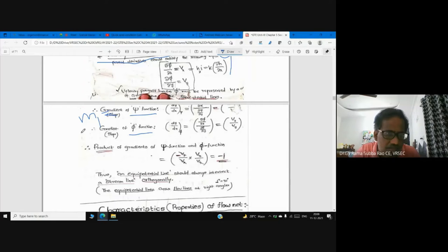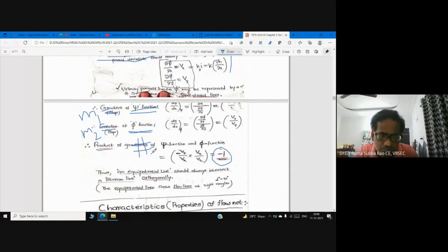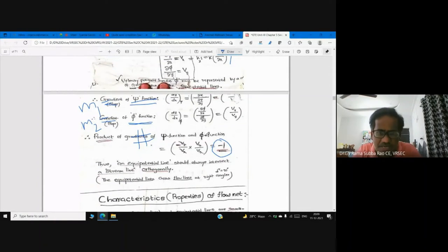In terms of phi, the slope is Vx by Vy. This is the slope m1 and this is the slope m2. The multiplication m1 into m2 - if you get minus one, that means the lines are perpendicular.